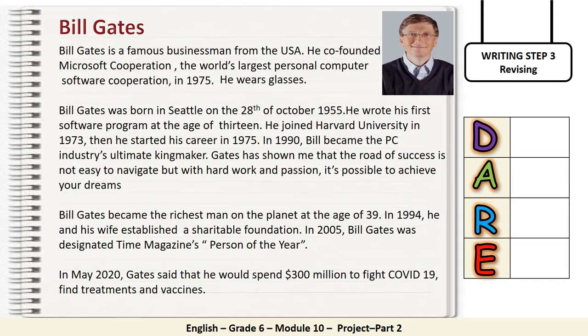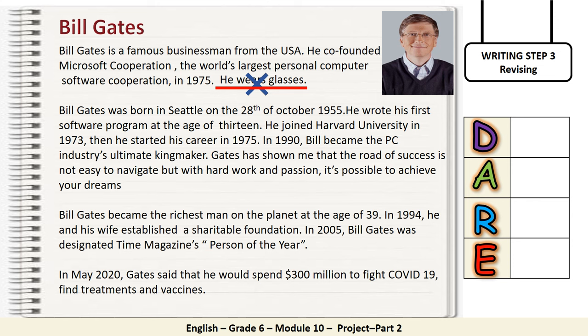Let's start revising. I need you to read and delete any unimportant information. Very good — you have to delete 'he wears glasses.' Let's move to the A and add some information. Very good — you can add some information about his charitable foundation.